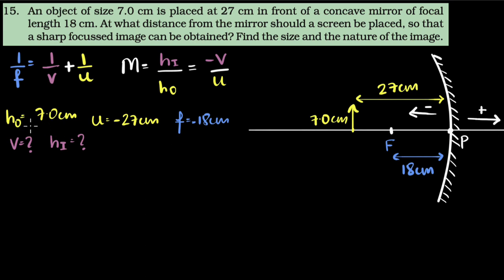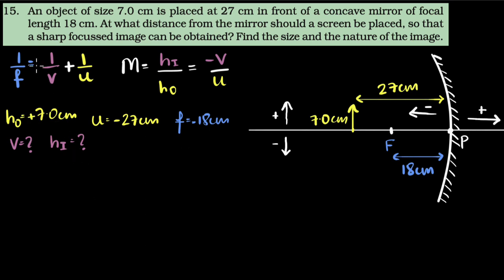What about the height of the object? For height, we use a similar sign convention: any height above the principal axis is positive, and any height below the principal axis is negative. In our case, the height is positive because it is above the principal axis. Now that we've applied sign conventions, we can use these formulae.